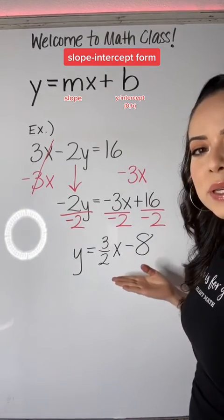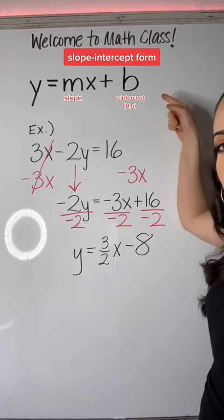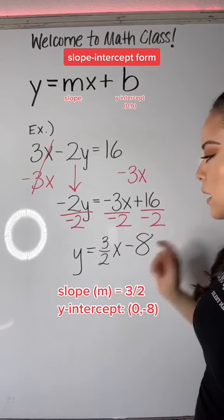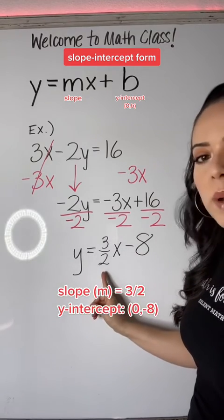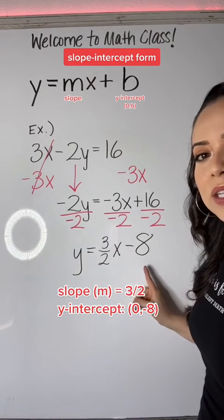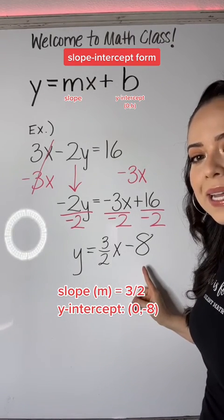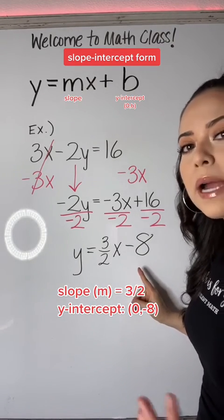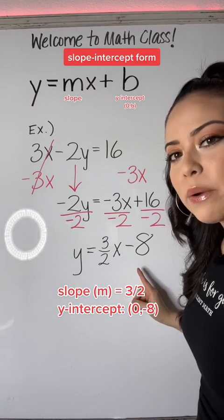Comparing our new equation with the slope-intercept form, you can see that the slope is positive 3 halves, and your y-intercept is at negative 8, or at the point (0, negative 8).